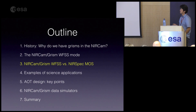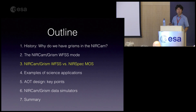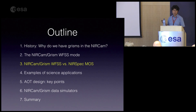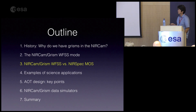Here is an outline of my talk. First, I'll explain why NIRCAM has a GRISM. Then I'll explain the wide-field slitless spectroscopy mode of NIRCAM. Most people want to know the benefit of NIRCAM GRISM spectroscopy versus NIRSpec, so I'll discuss that. Then I'll present examples of science applications. The group at STScI is finalizing the AOT design for NIRCAM GRISM observations, and I'll highlight some key points. Finally, I'll cover data simulators and give a summary.